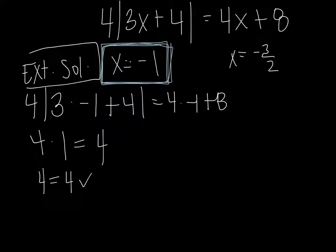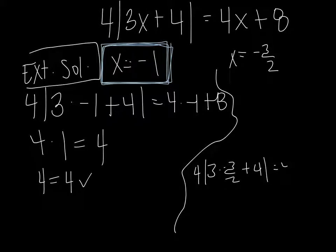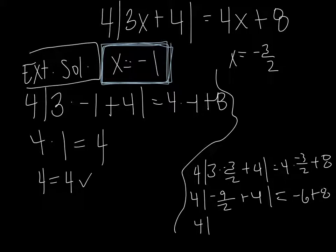We've got to do the same thing for our negative 3 halves. So we'll do 4 times 3 times negative 3 halves plus 4 equals 4 times negative 3 halves plus 8. Which would give us 4 times negative 9 halves plus 4 equals negative 6 plus 8. Negative 9 halves plus 4, negative 9 halves plus 8 halves, which is negative 1 half. And that's 2.